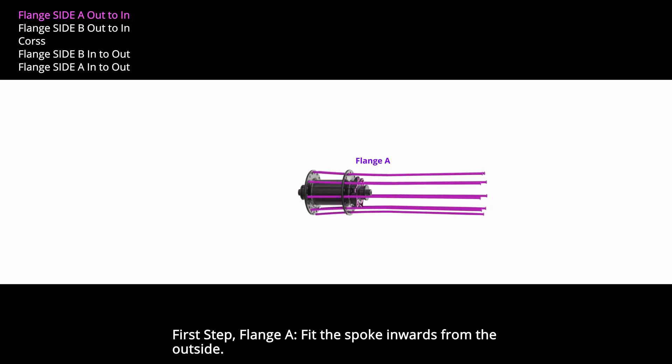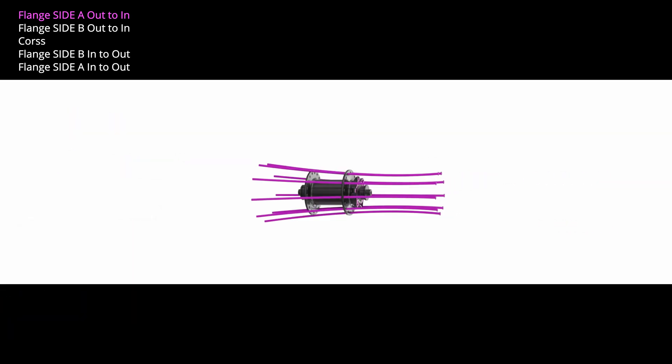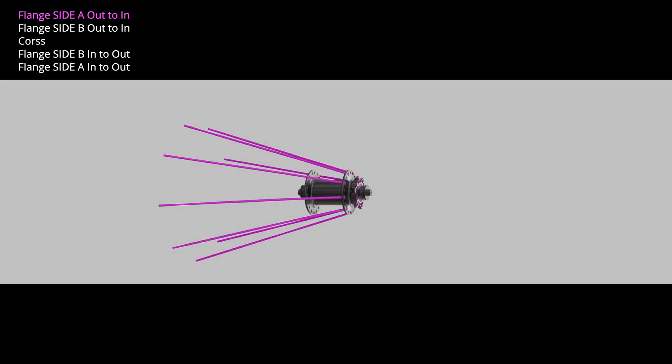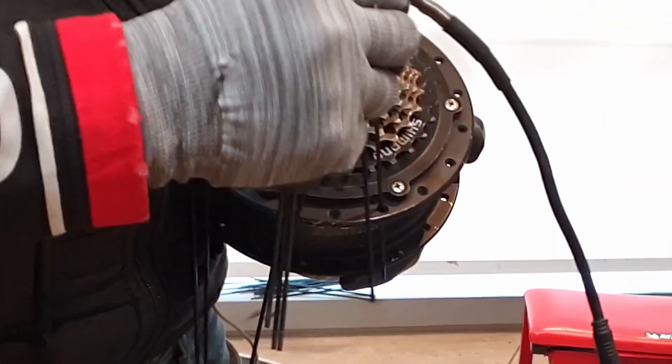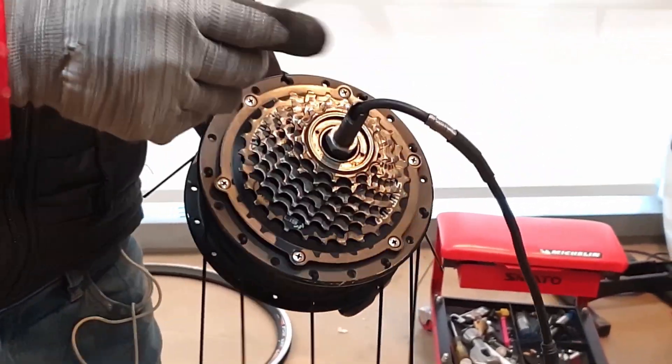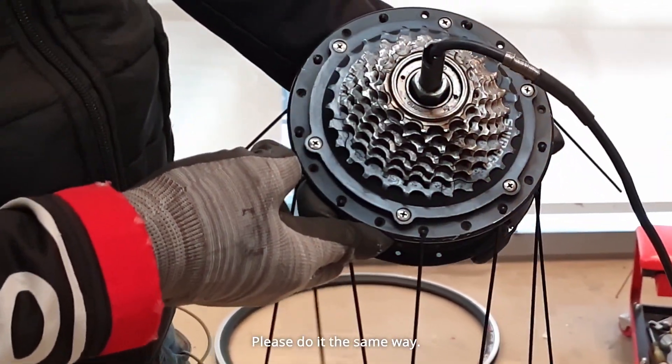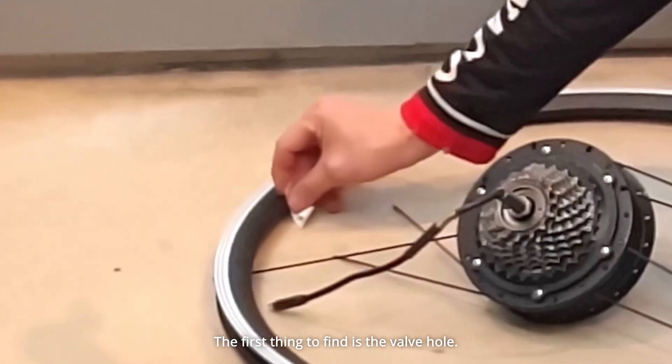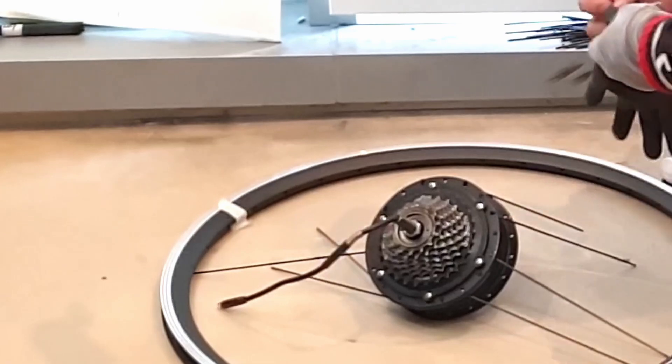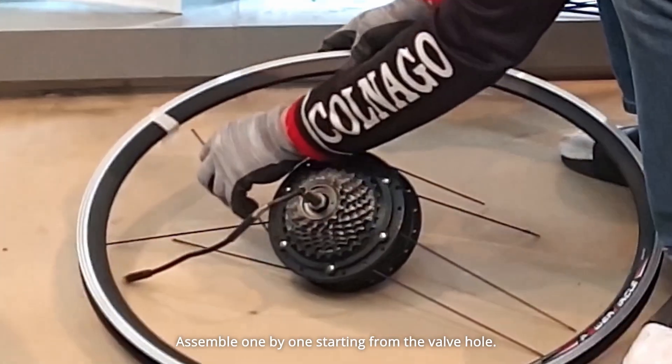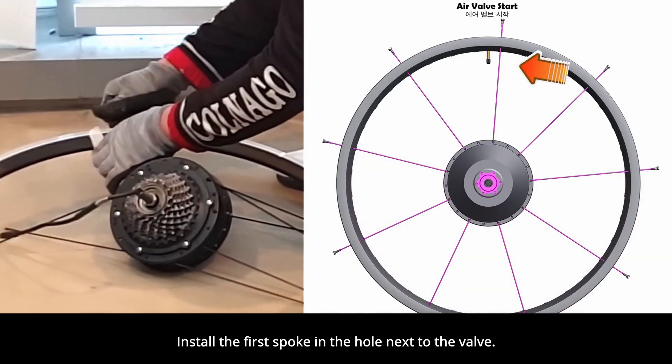First step flange A. Fit the spoke inwards from the outside. Please do this first. Please do it the same way. The first thing to find is the valve hole. Please mark it like this. Assemble one by one starting from the valve hole. Install the first spoke in the hole next to the valve.